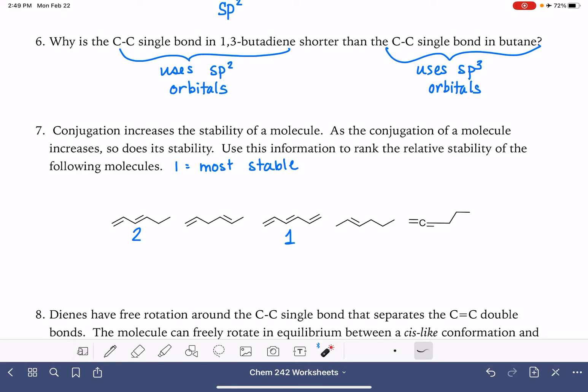The worst case scenario in terms of double bonds is to have cumulated double bonds. These are double bonds that are just immediately in series or in sequence. This is going to be the least stable out of all of the molecules. I'm going to give that a five.